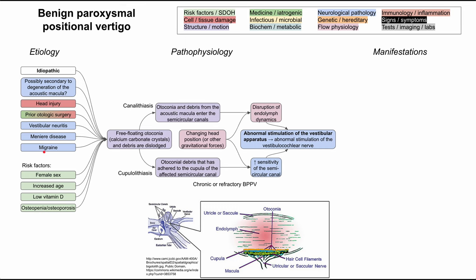Additional risk factors include female sex, increased age, low vitamin D or vitamin D deficiency, as well as osteopenia and osteoporosis. It's thought that osteopenia and osteoporosis might disrupt the bones inside the inner ear, though the mechanism is not entirely clear. However, there is a statistically significant association between osteopenia, osteoporosis, and BPPV.